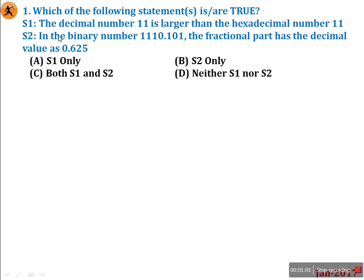The question is: Which of the following statements are true? S1: The decimal number 11 is larger than the hexadecimal number 11. S2: In the binary number 1110.101, the fractional part has the decimal value 0.625. Is it S1 only, S2 only, both S1 and S2 true, or neither S1 nor S2 true?